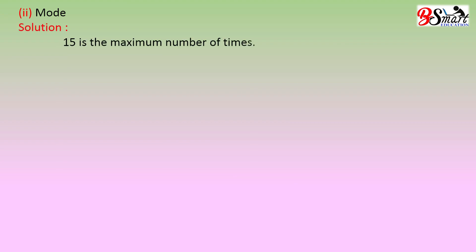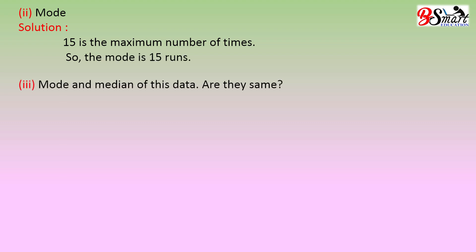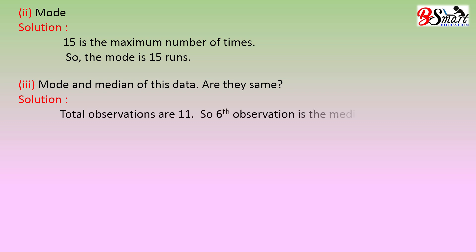Now second, mode means the value that occurs the maximum number of times. Here 15 occurs 3 times. Therefore, the mode is 15 runs. Third, total observations are 11, so the 6th observation is the median. The 6th observation is 15. Therefore, the median of the given data is 15 runs.